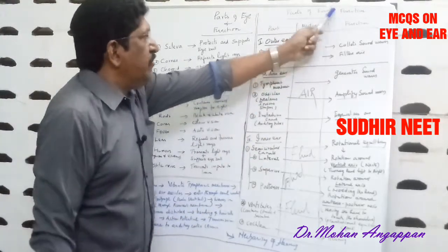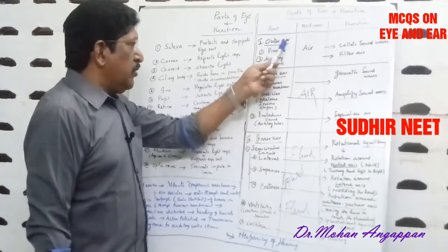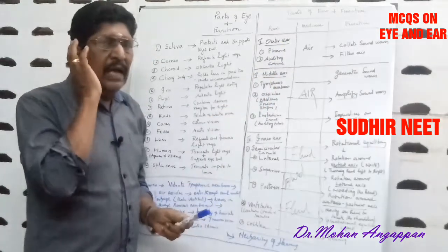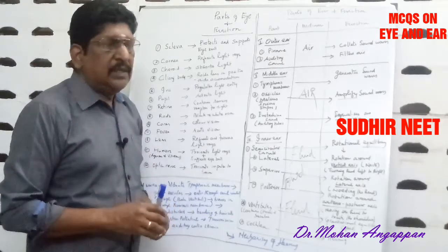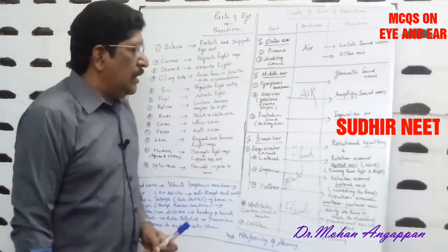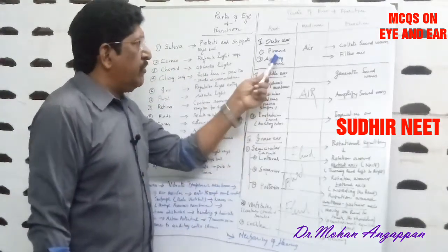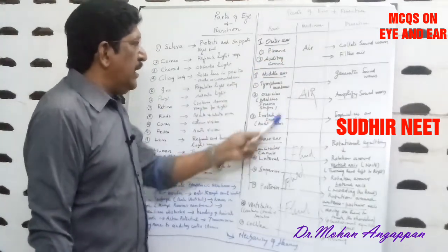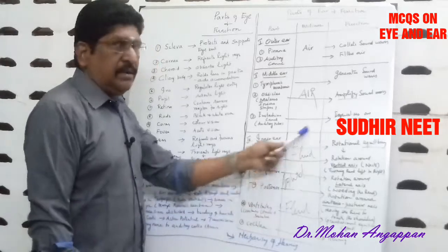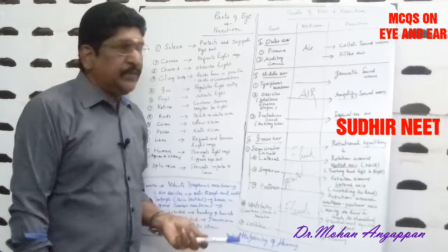Coming now to the parts of the ear and their functions. There are three parts: outer ear, middle ear, and inner ear. You must know the medium through which sound waves pass. For the outer ear, the medium is air. For the middle ear, the medium is also air. Whereas in the inner ear, the medium is fluid — the waves are transmitted through perilymph and endolymph.